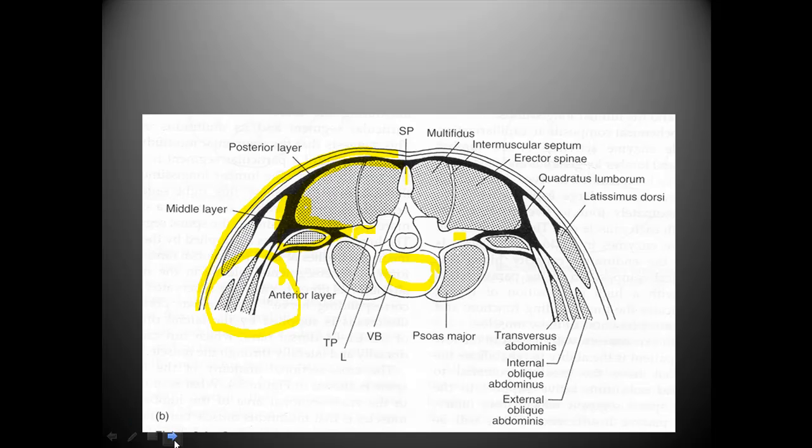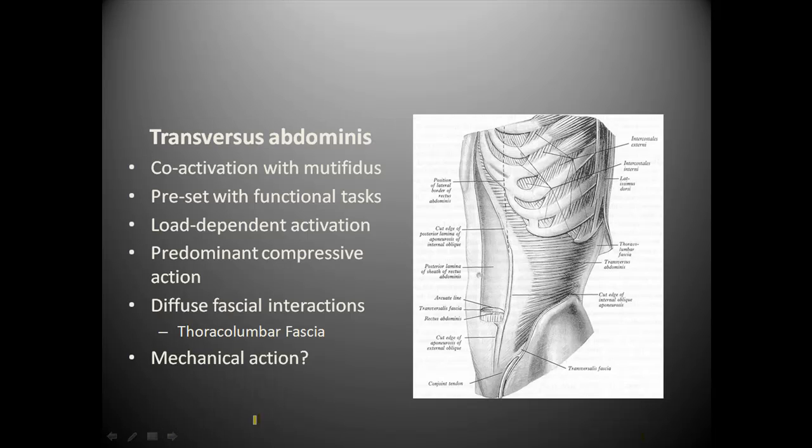Now if we look from the anterior perspective, here we have a schematic view of the transverse abdominus. We can see the horizontal fiber orientation which attaches into the lateral raphe area posteriorly. This is, as I mentioned previously, the junction of the layers of the thoracolumbar fascia.